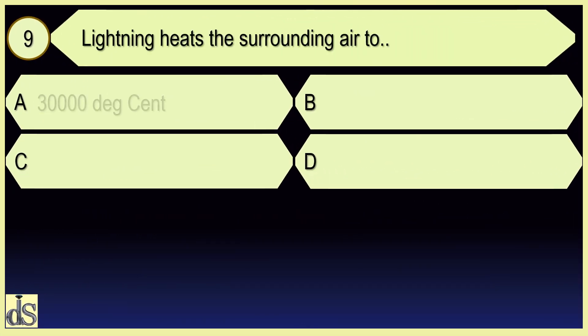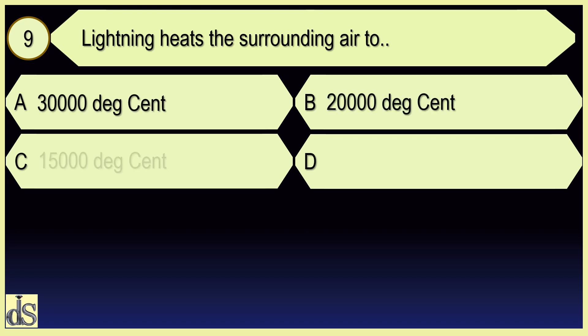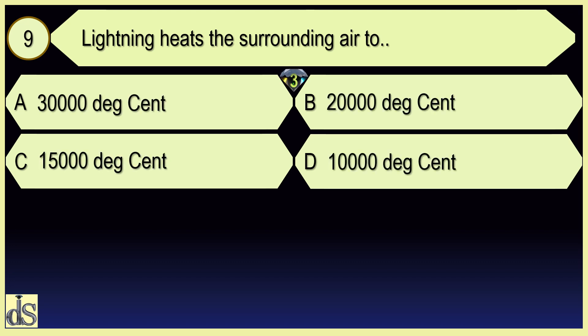Lightning heats the surrounding air to 30,000 degrees Celsius.